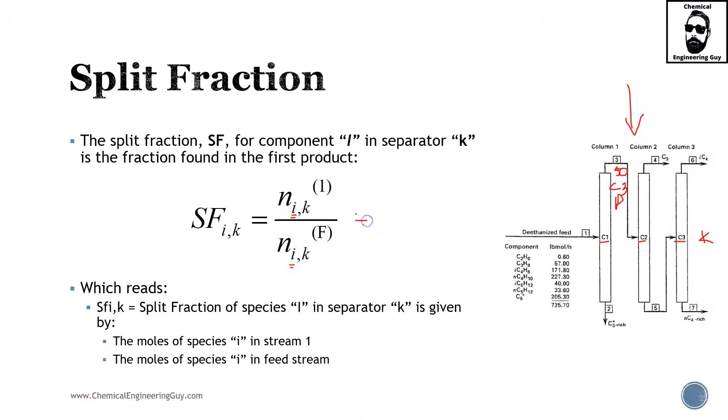The way we calculate SF for C3 in separator 1 - this is what I was telling you, it's a little bit inconvenient, but I think you get the idea. This is propane in separator or column 1.